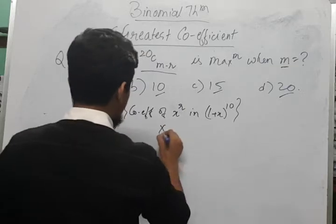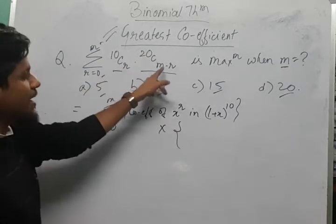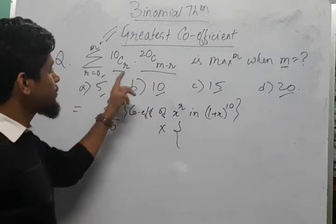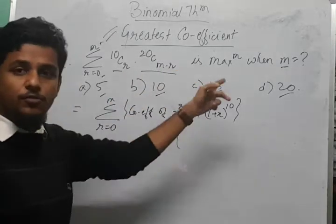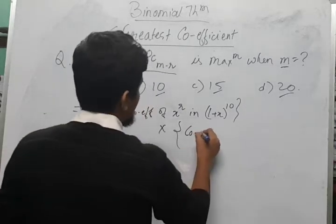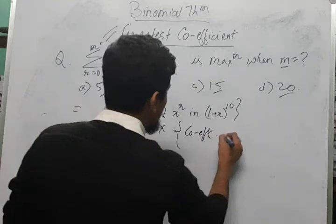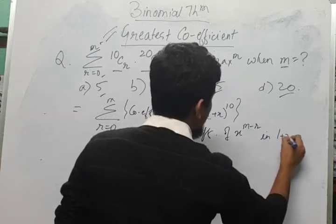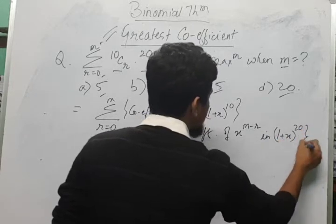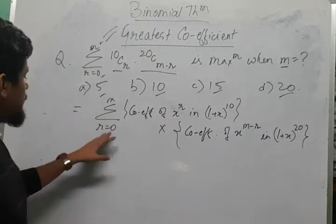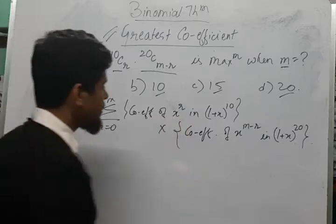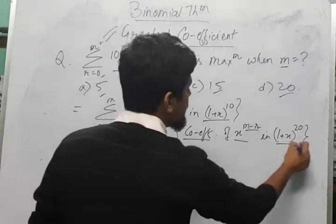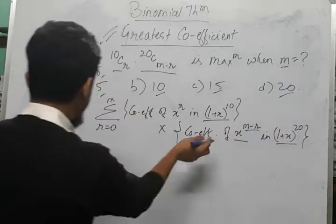Similarly, we can write 20C(m-r) as the coefficient of x to the power (m-r) in the expansion of (1+x) to the power 20. So this is the combined expansion that we are working with.